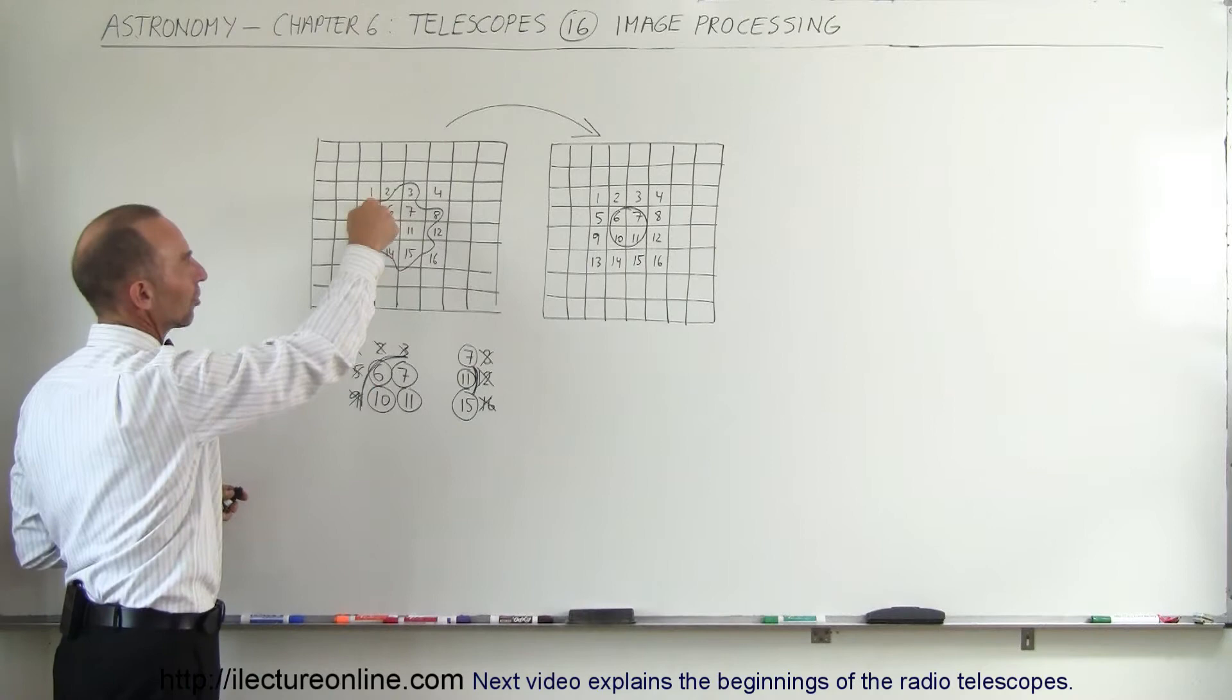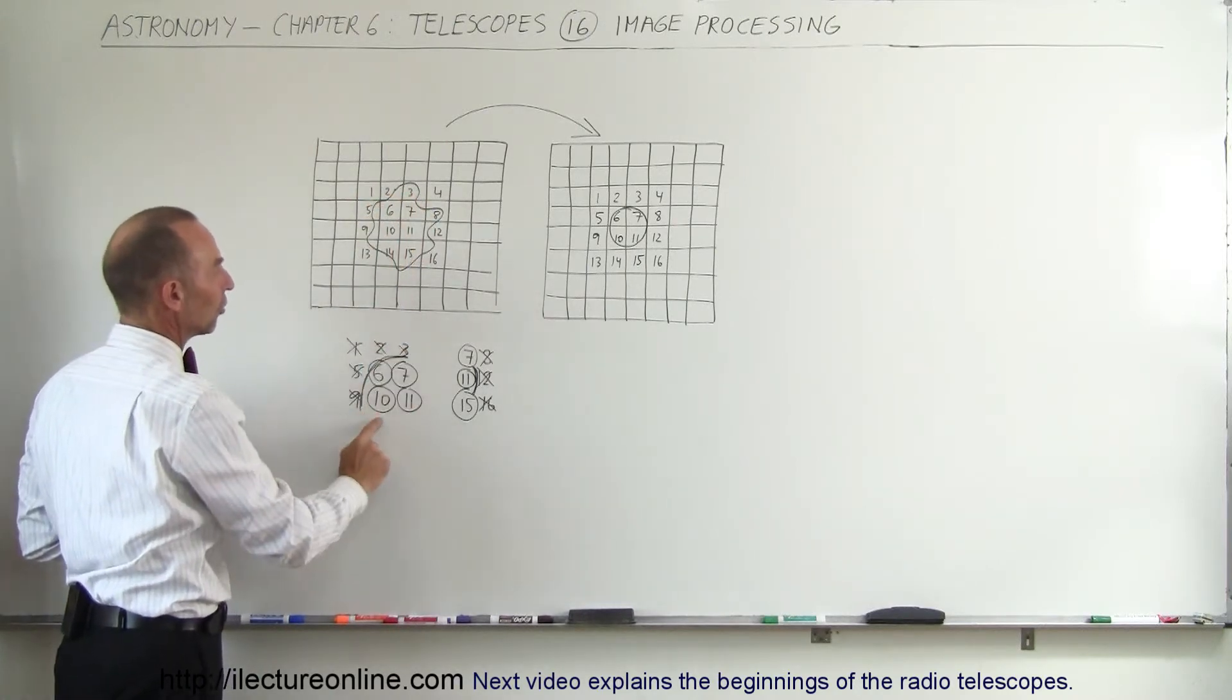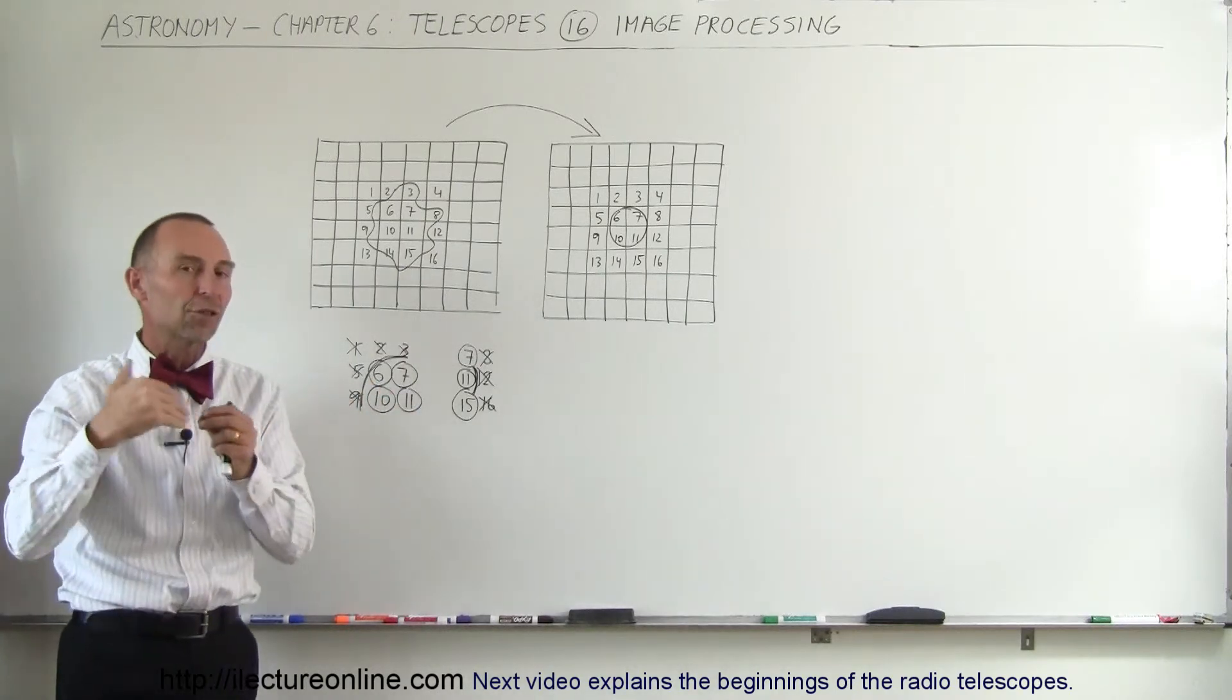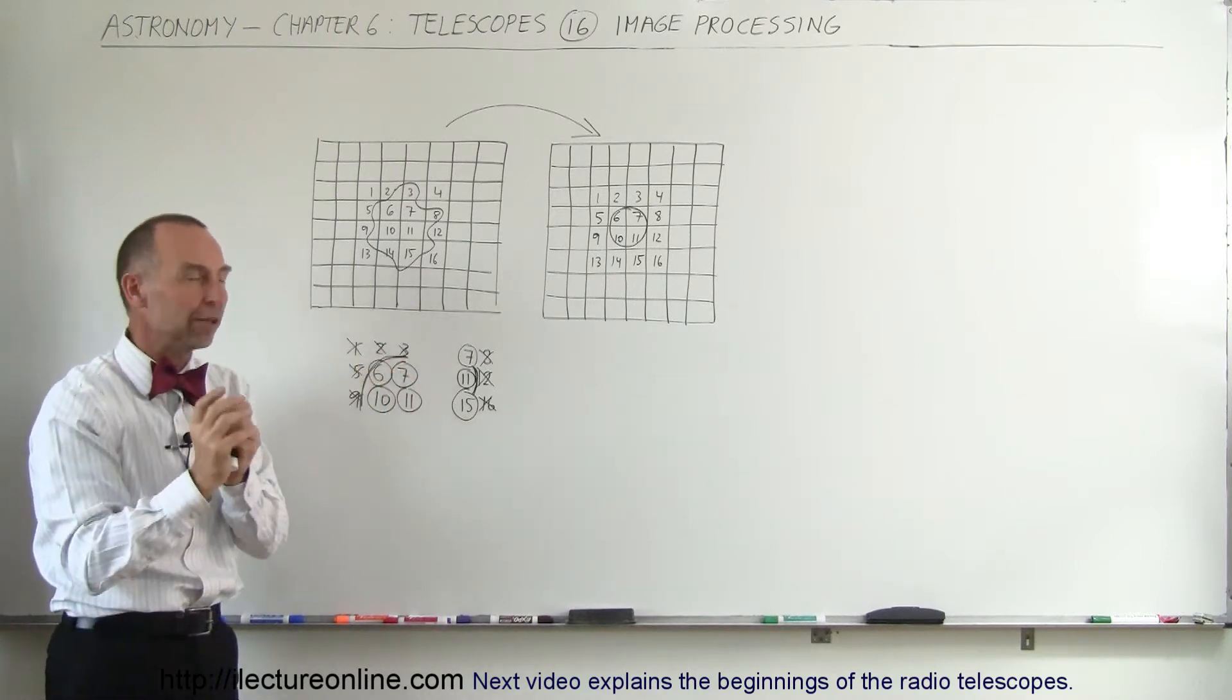We notice that pixel number 6 has a full intensity image, pixel number 7 has a nearly full intensity image, so do 10 and 11. They pass the threshold of receiving enough light to say yes, the information on those pixels is relevant.